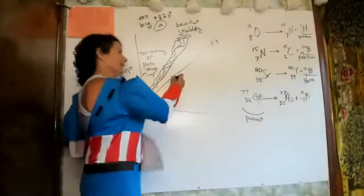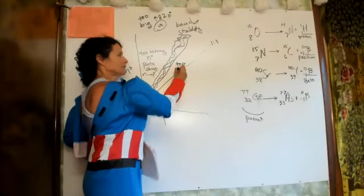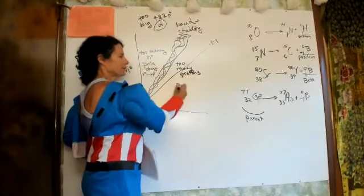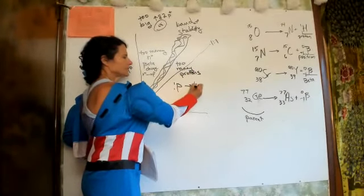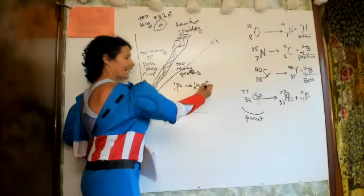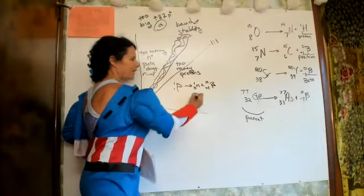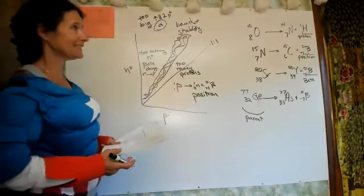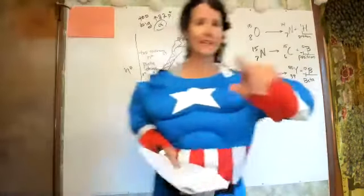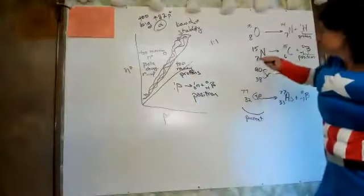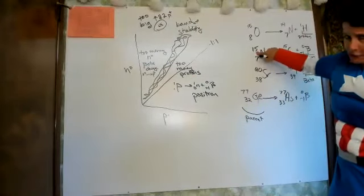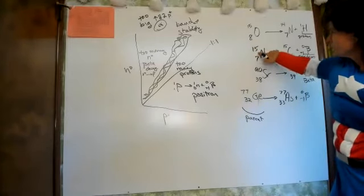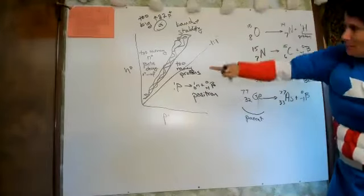If you're below the band of stability, it means you have too many protons. When a proton changes into a neutron — that would be positron emission. Something with too many protons will often go through positron emission.